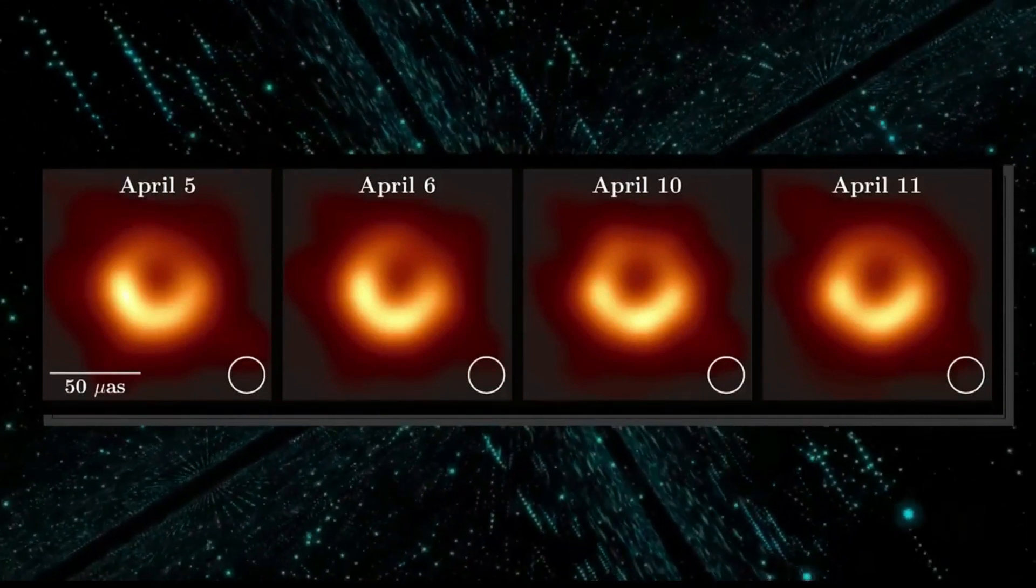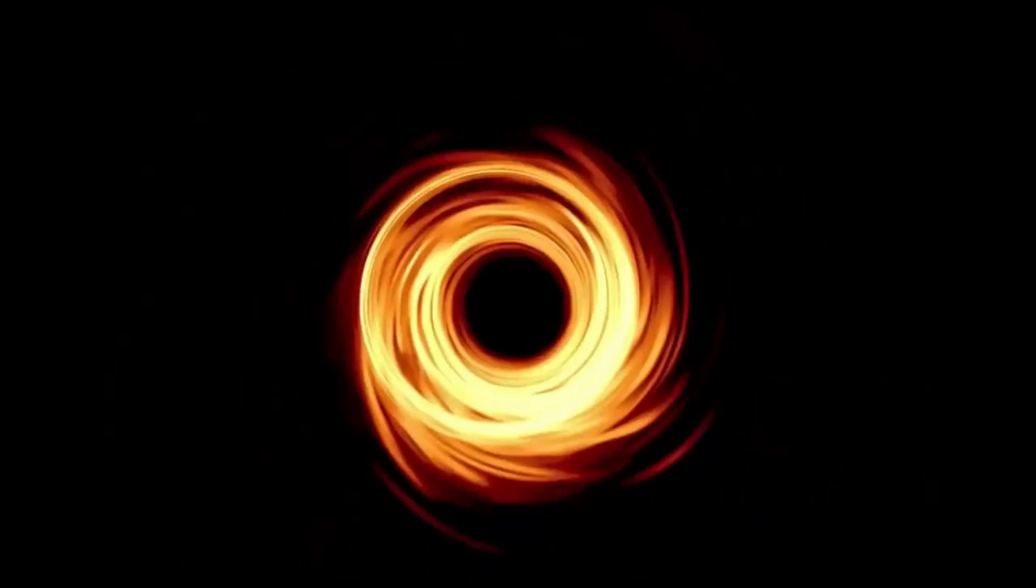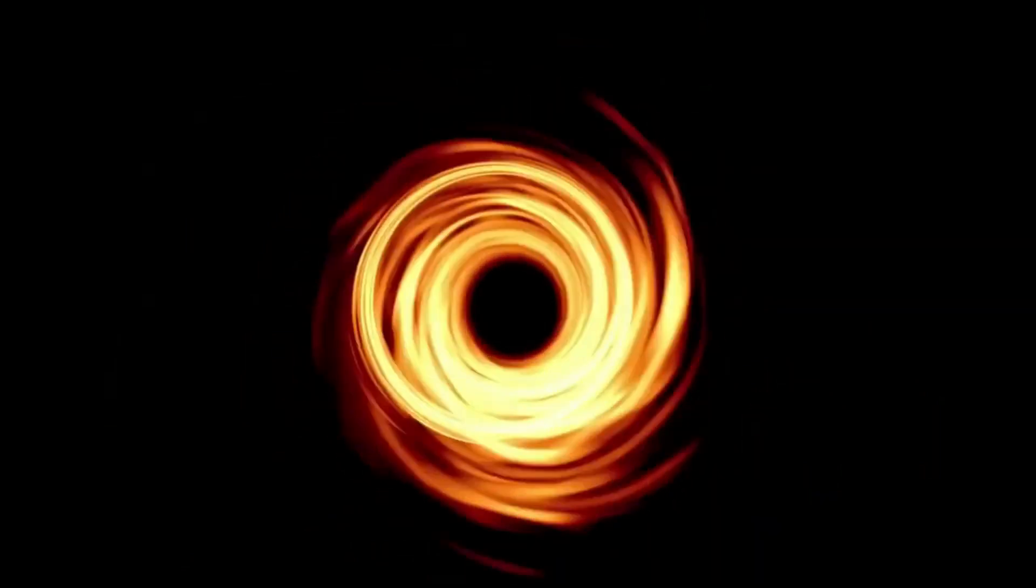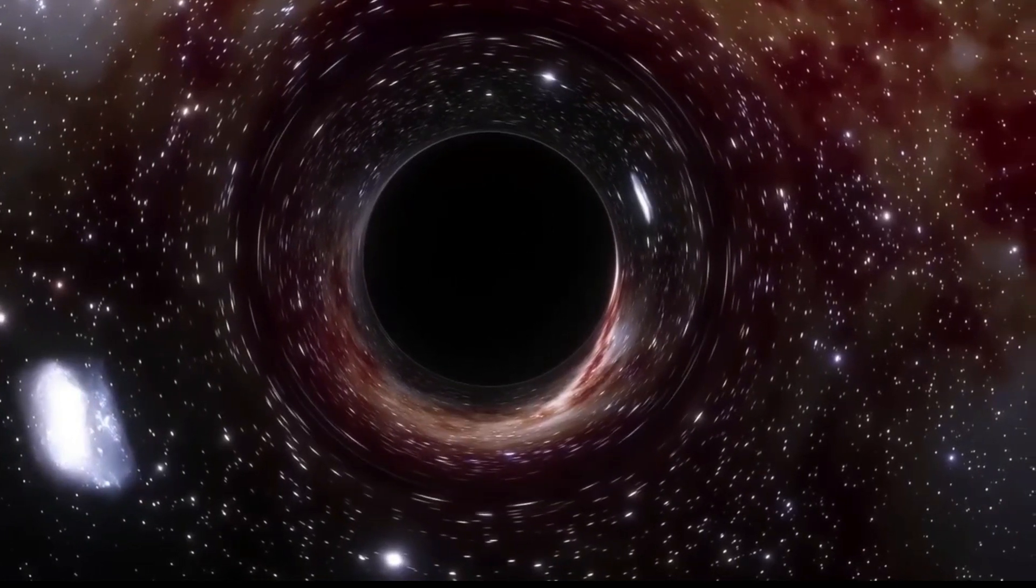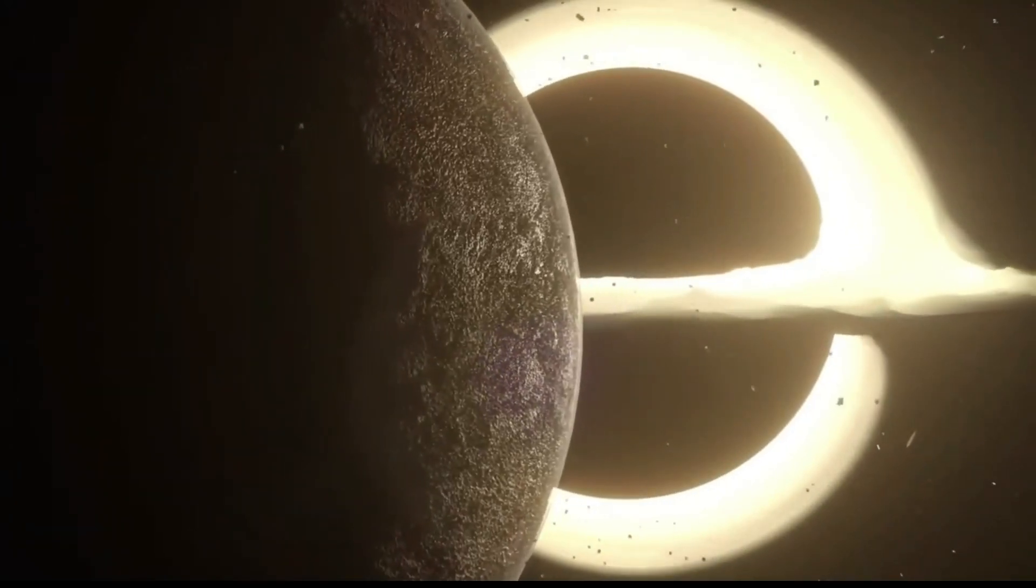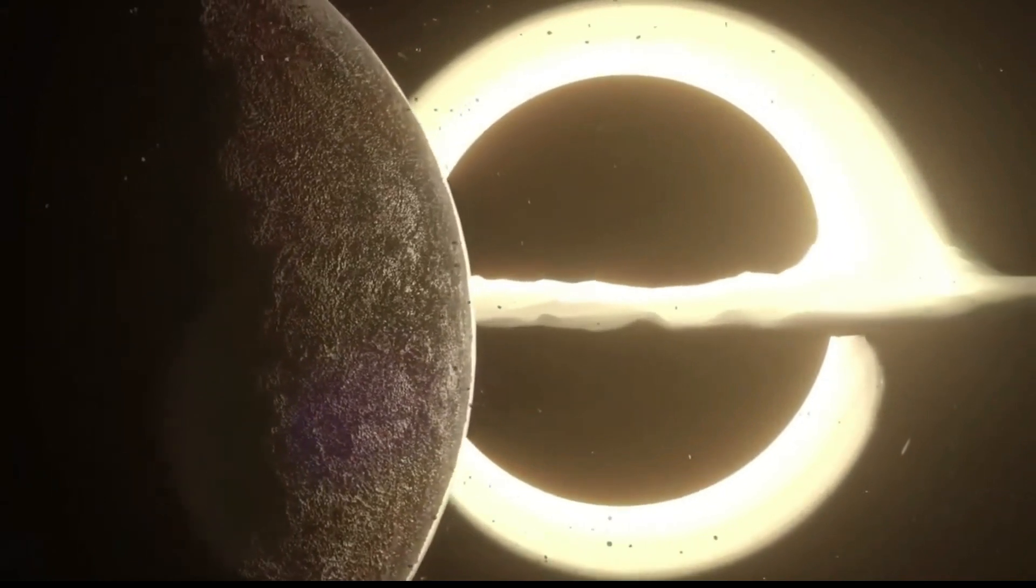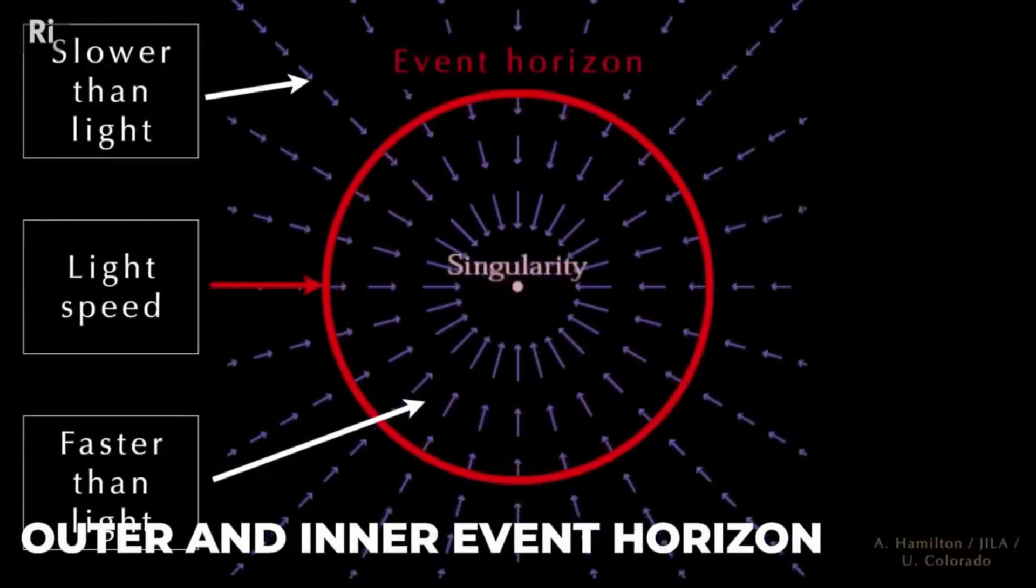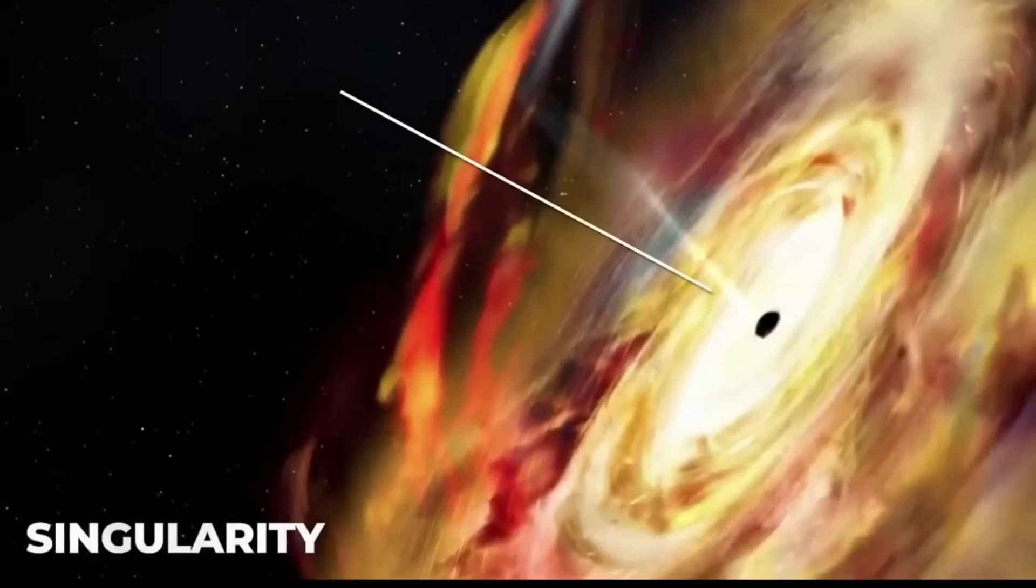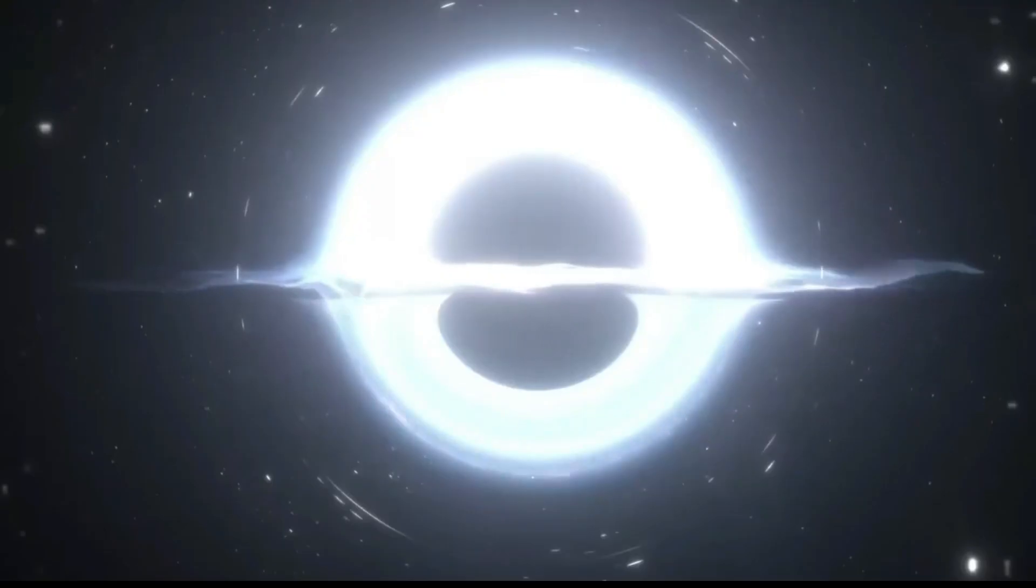In a very specific mathematical case, the singularity in a spinning black hole becomes a ring, not a point, but that mathematical situation won't exist in reality. Others say that the singularity is actually a whole surface inside the event horizon. We just don't know. It could be that in real black holes, singularities don't even exist.